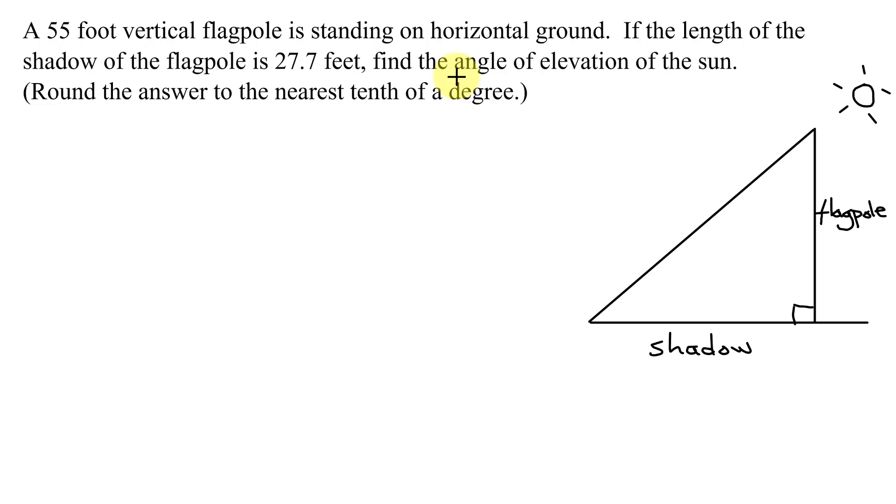And now remember angle of elevation. The angle of elevation is always measured from the horizontal, and it's how far I have to raise my eyes from the horizontal to see the top of the flagpole. As I'm trying to find the angle of elevation of the sun, that is going to be my variable. So I'm going to let theta equal the angle of elevation of the sun.